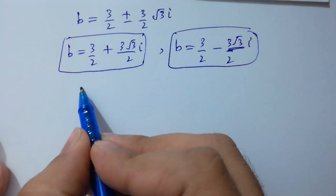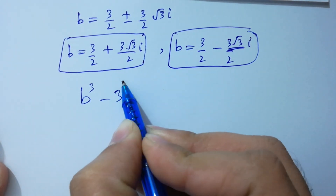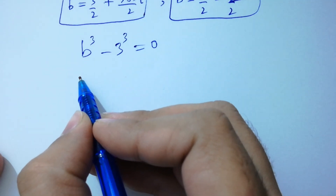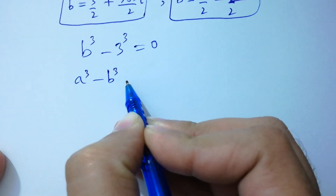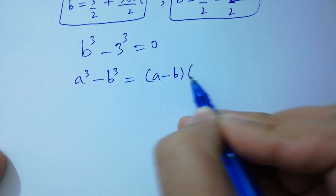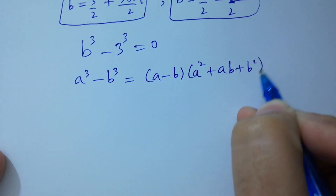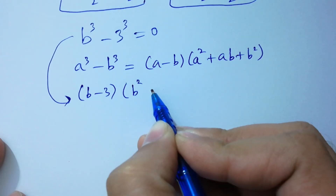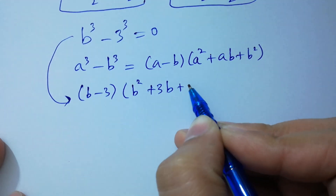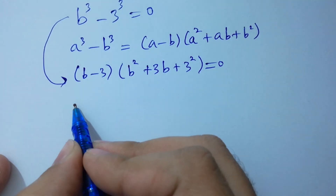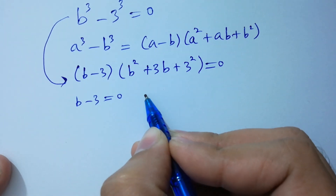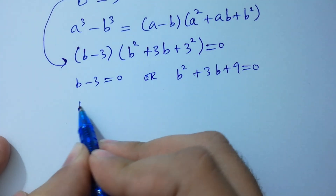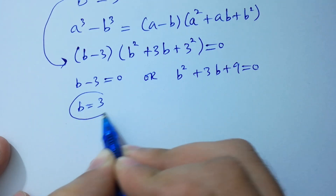B³ minus 3³ equals 0 uses the formula A³ minus B³ equals (A minus B)(A² plus AB plus B²). Applying it here: (B minus 3)(B² plus 3B plus 9) equals 0, giving B equals plus 3 as our fourth real solution.